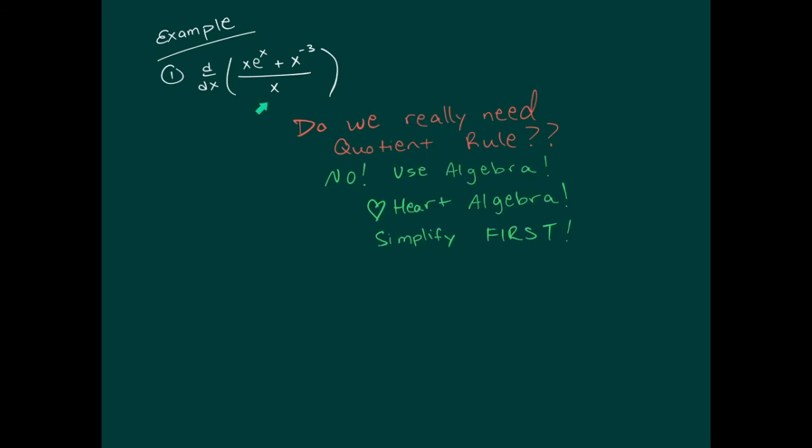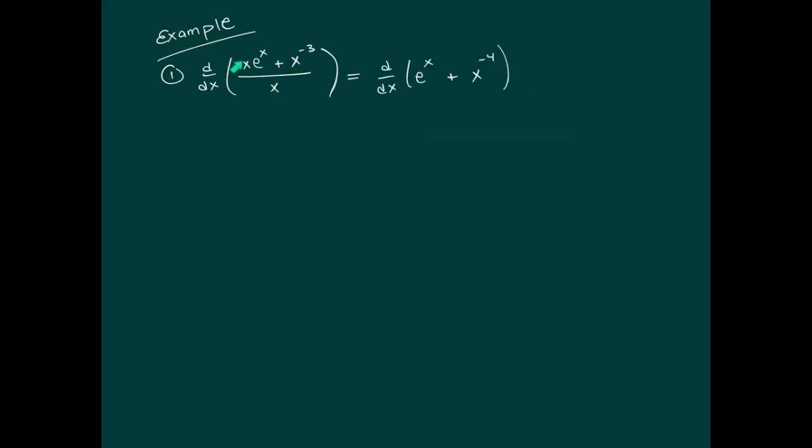Look at what you're doing. In this case, if we do a tiny bit of algebra, we can completely avoid the quotient rule. The x cancels here, and x^(-3) divided by x is x^(-4). Now this problem is super simple. Take the derivative of e^x to get e^x, and apply the power rule for the second piece. That was a lot easier than doing the quotient rule. Think about the easiest, least painful way to do the problem.